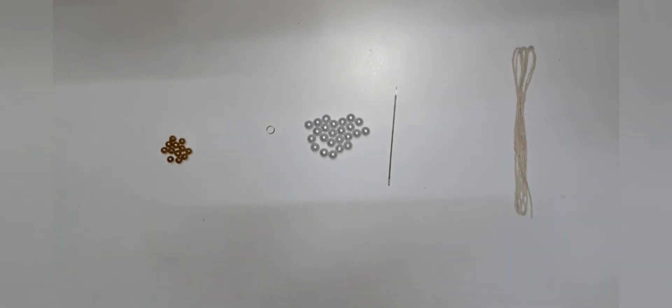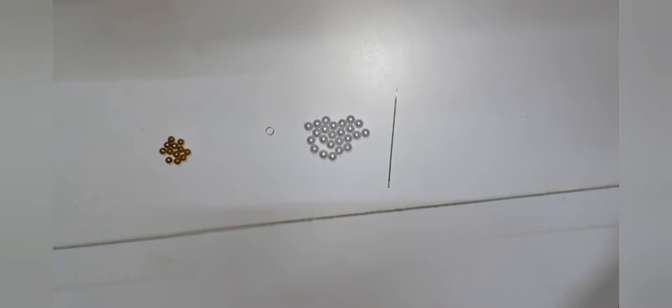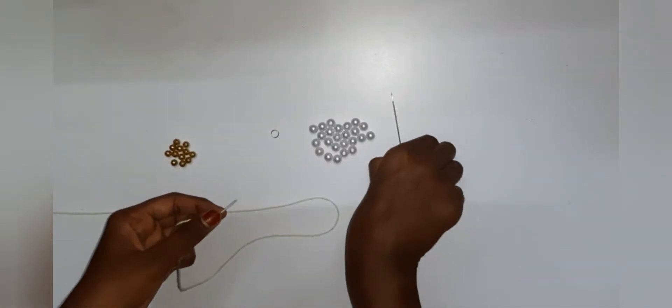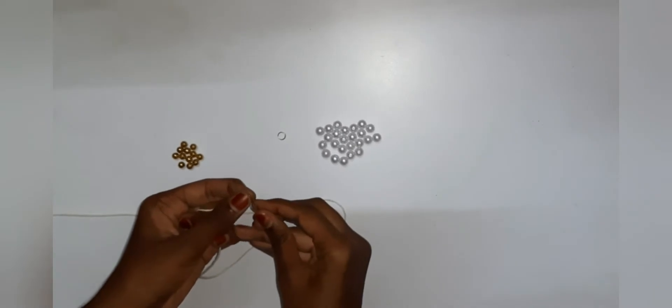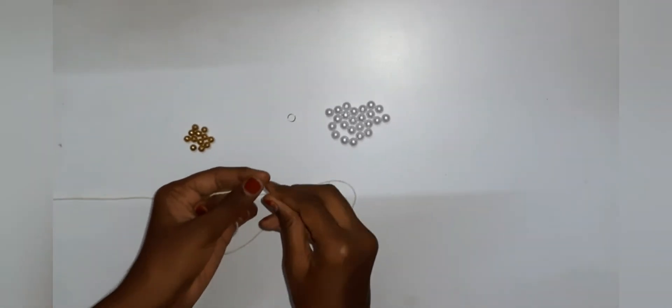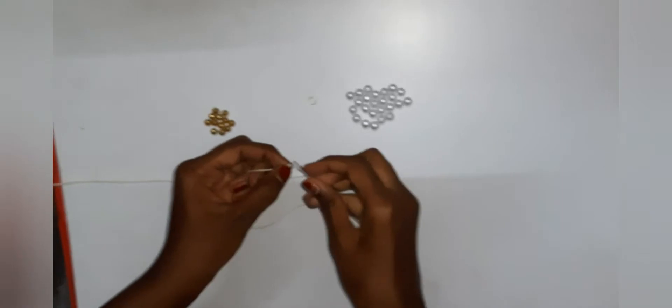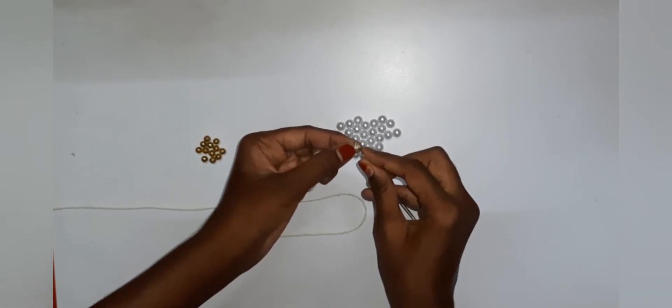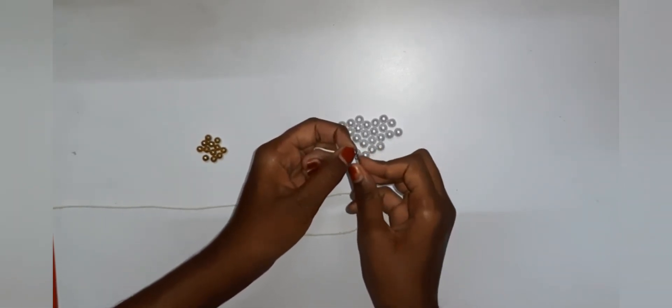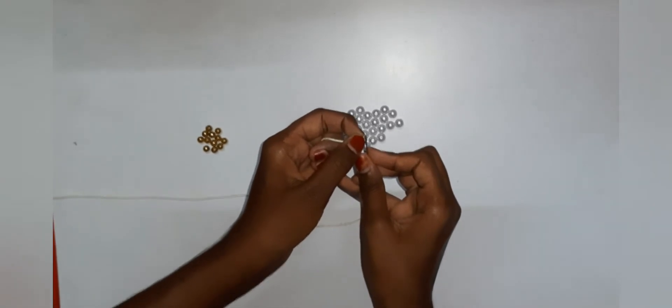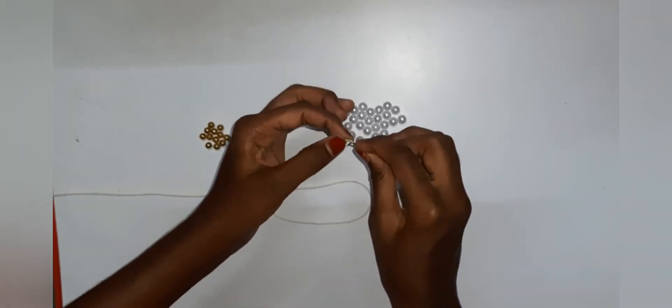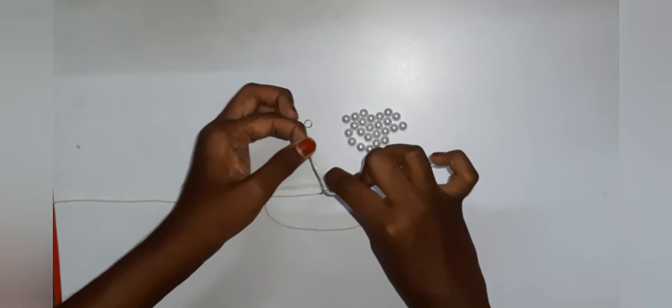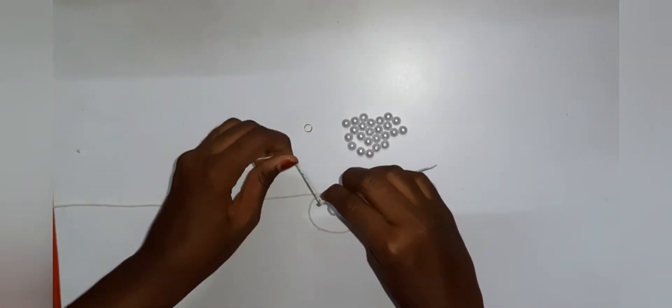Now you need to take any thread. I'm using this thread that fits my beads the correct size. If you want you can use gold or any thread about your bead size and the needle. So first you need to flatten the thread so that it will be easy to go through the needle's hole.